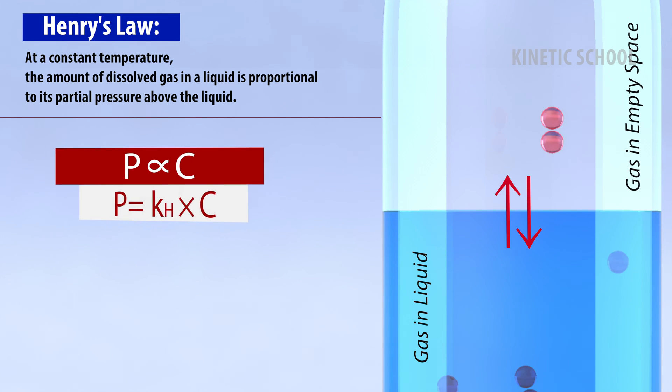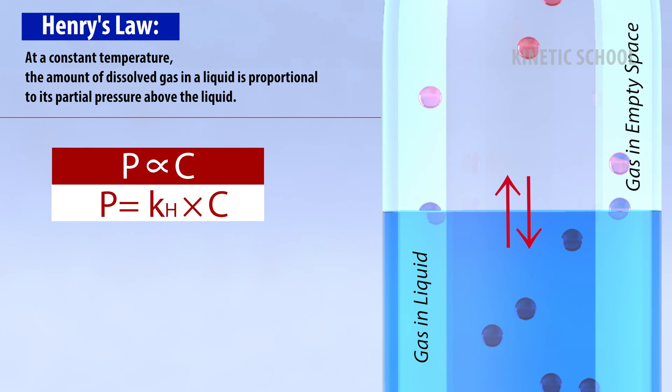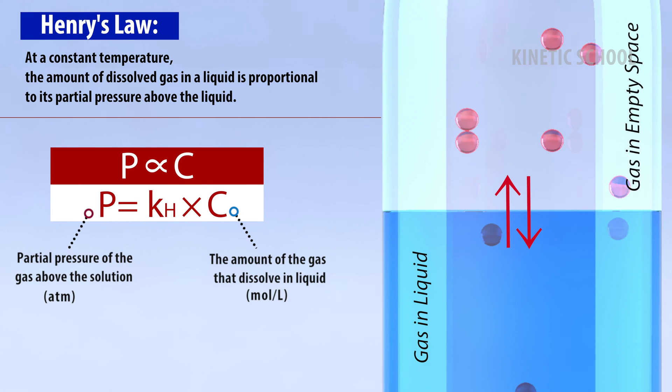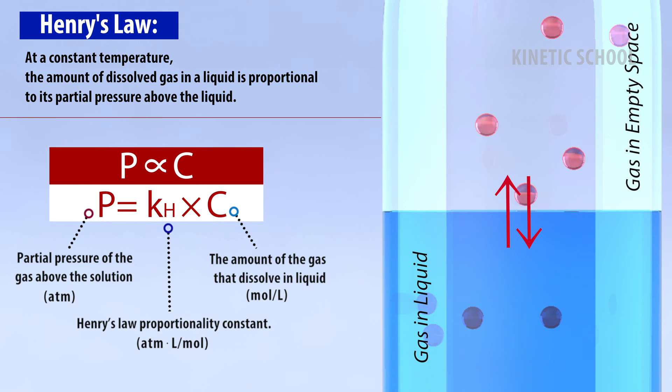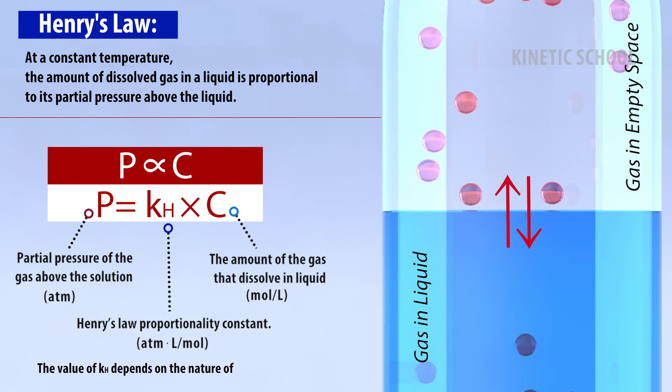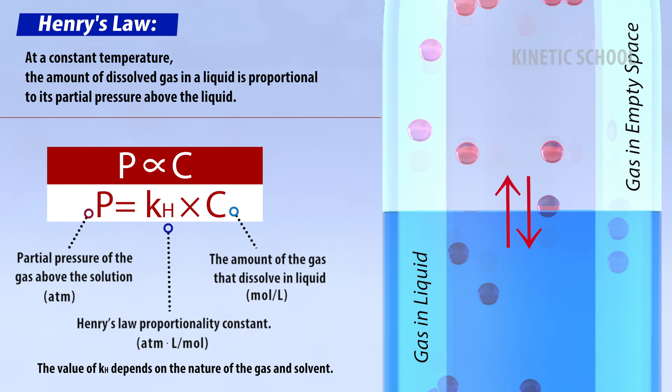That means P proportional to C, or P equals Kh times C. Where P is the partial pressure of the gas above the solution, C is the amount of the gas that dissolves in liquid, and Kh is the Henry's Law proportionality constant. The value of Kh depends on the nature of the gas and solvent.